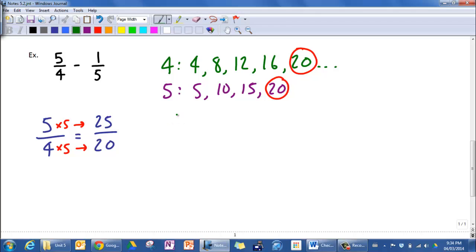I'll do the same thing with one-fifth. One-fifth, I want that to be something over twenty. If I multiply five times four, I get twenty. So I'm going to multiply this by four as well, and I get four over twenty.